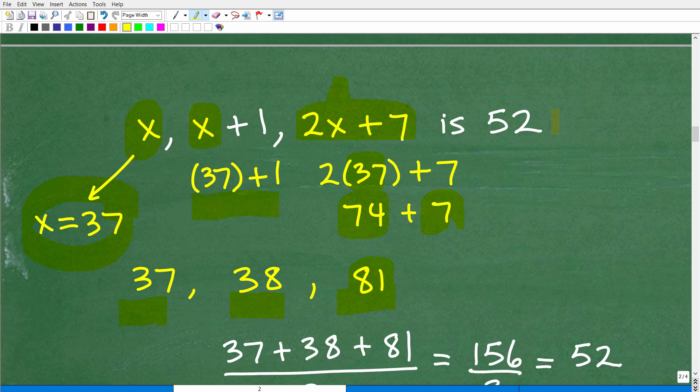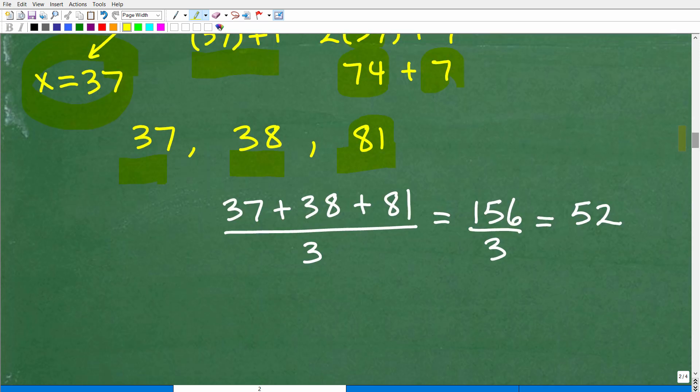So the average of these three numbers should be 52, right? So the average of 37, 38, and 81 should be 52. Well, let's go ahead and check that. Let's go ahead and just see how well we did. So 37 plus 38 plus 81, if we're going to find the average of these three numbers, we're going to add them up, divide by 3. And when we add these numbers up, we get 156. Divide 156 by 3, you get 52.